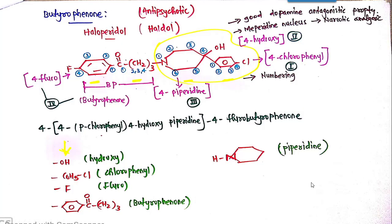Coming towards the structure of Haloperidol, as you can see in this image. Since butyrophenone is the class, the name itself tells us: 'butyro' means butyl and 'phenone' means phenyl plus ketone (on). So 'phenone' is phenyl and ketone, and 'butyro' is butyl. We have now easily memorized the butyrophenone half-structure. So this is butyrophenone.